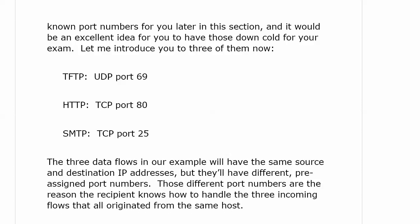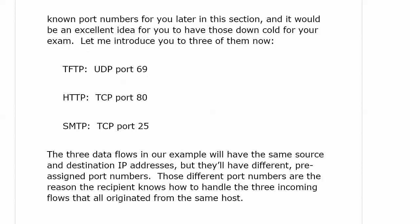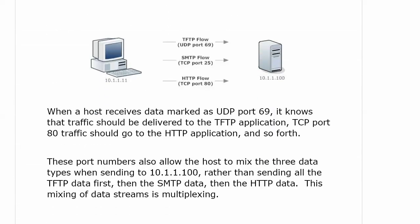TFTP is on UDP port 69, HTTP on TCP port 80, and SMTP on TCP port 25. These three different flows of traffic each carry port markings, so when a host gets data marked as UDP port 69, it knows the traffic should go to the TFTP application, and so forth.